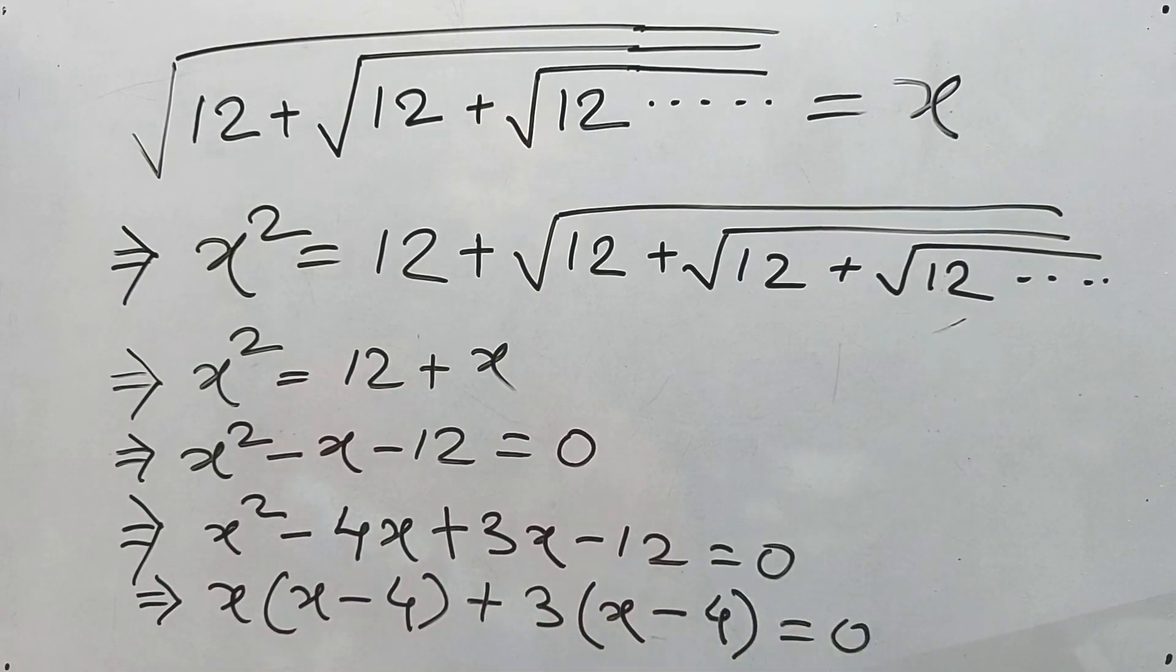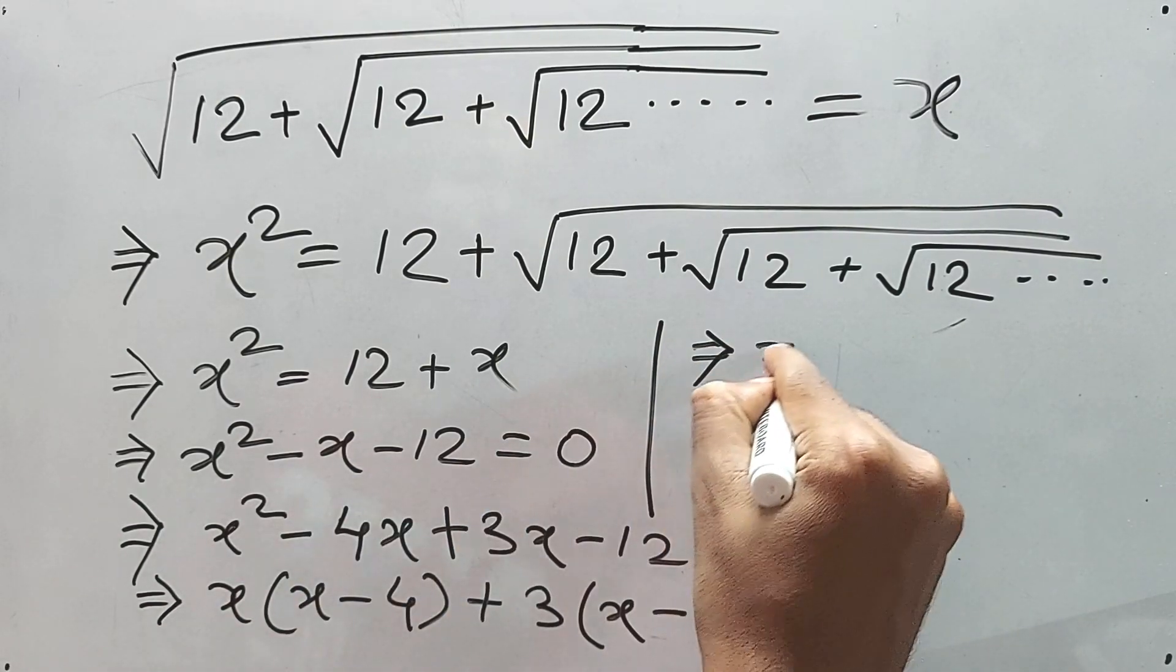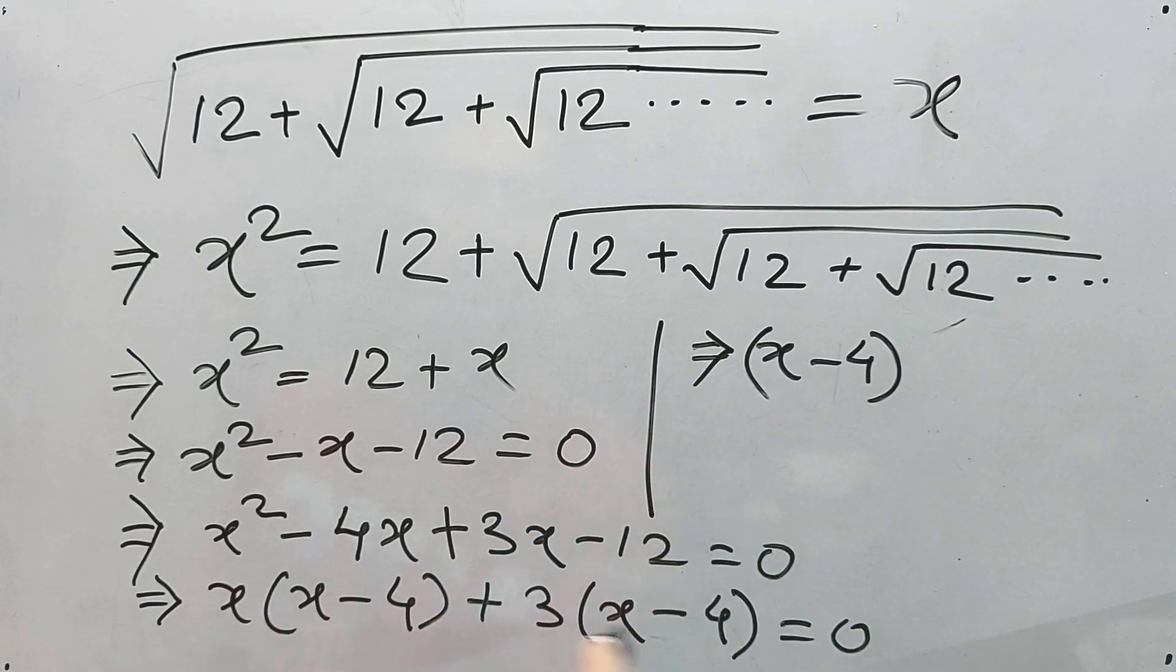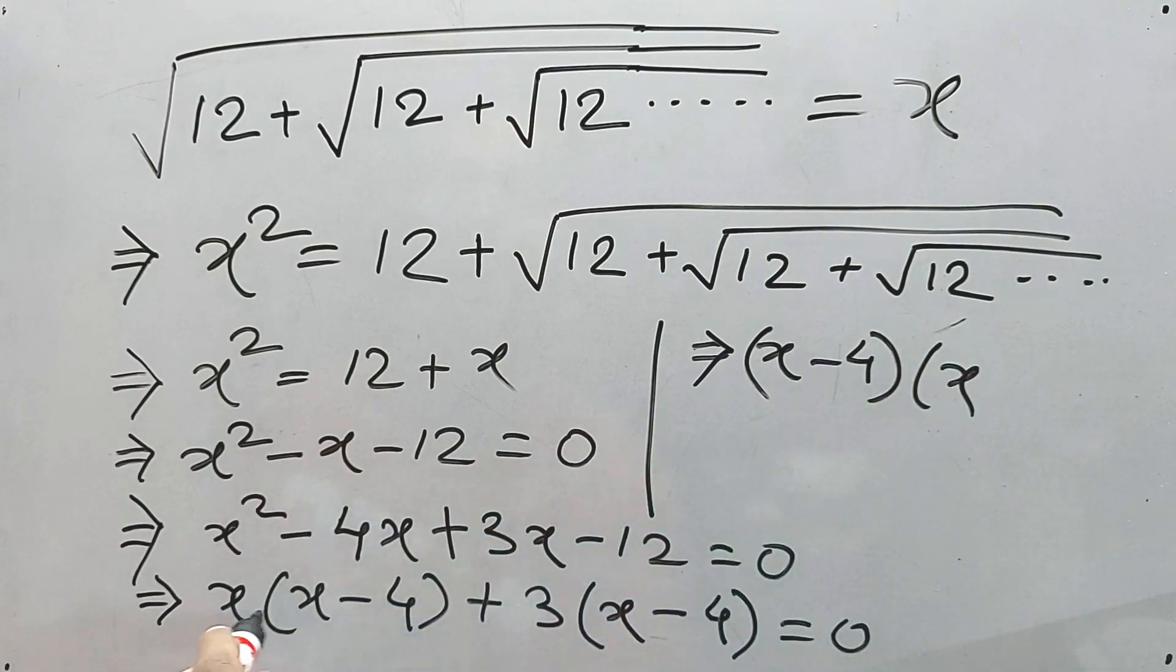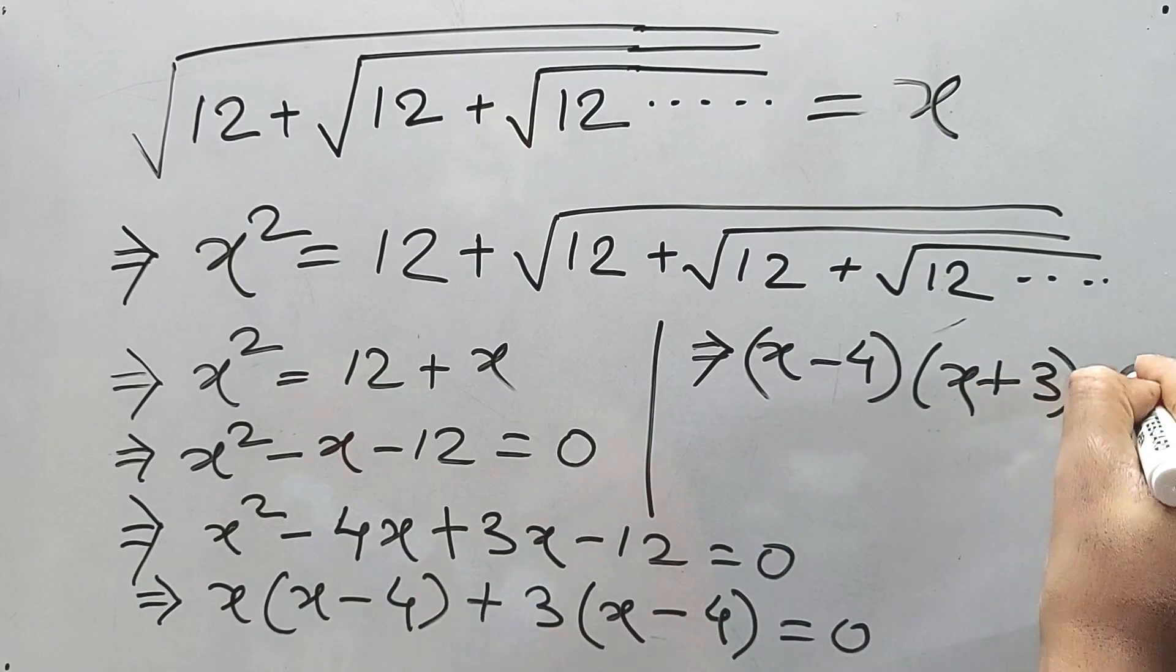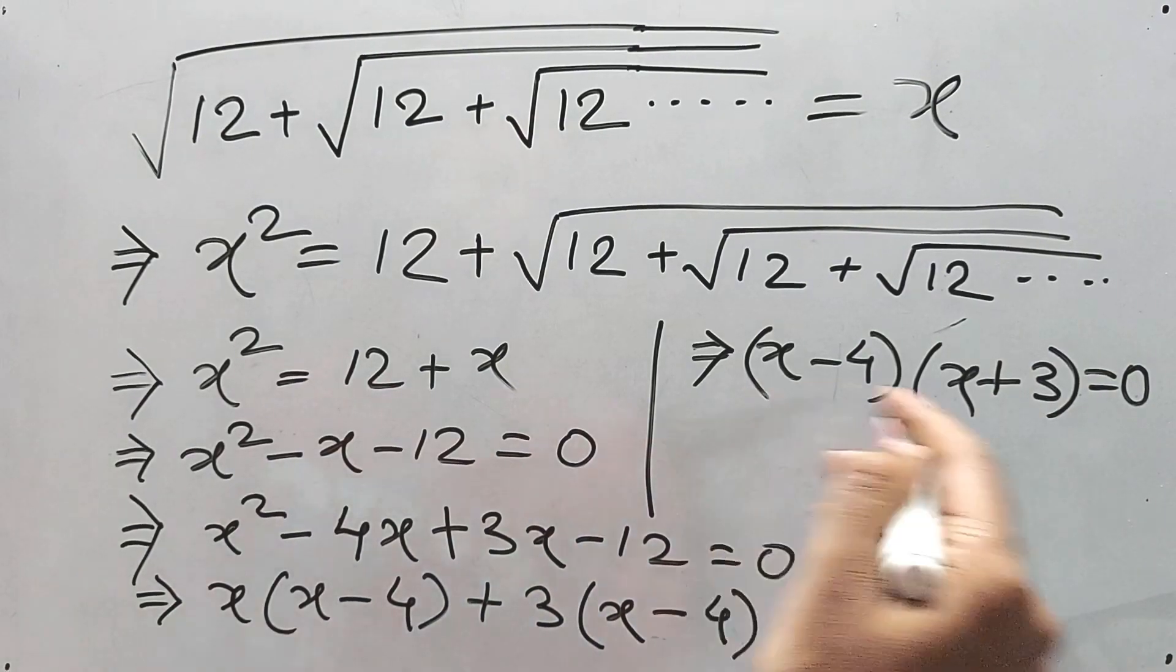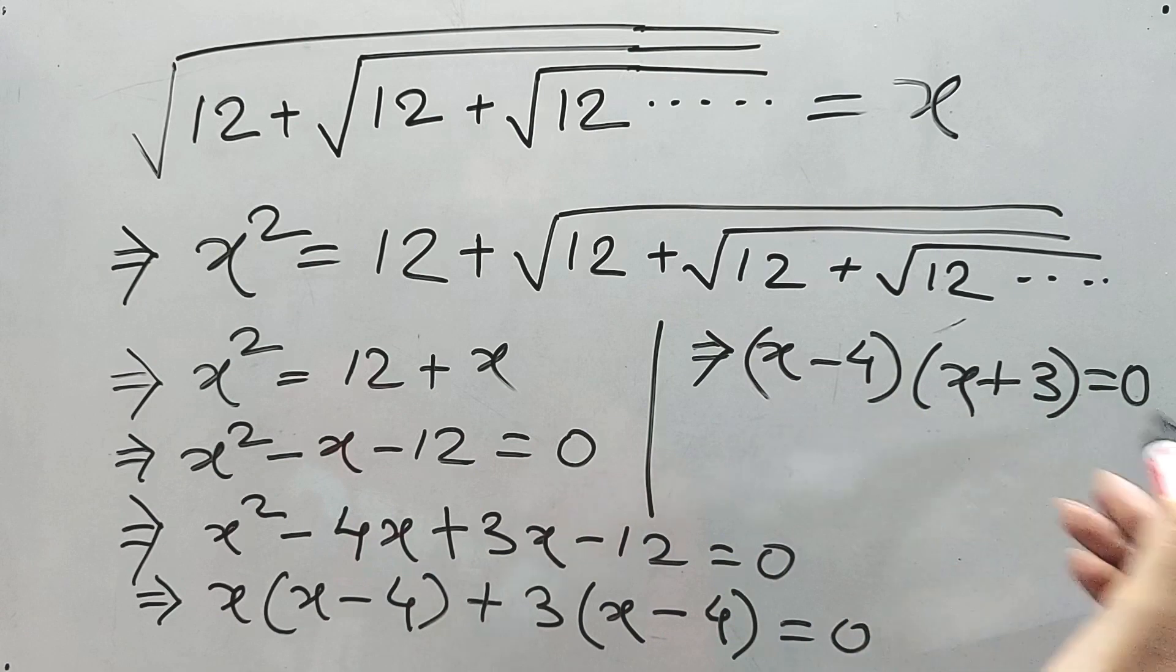Let's do this here. So this implies x minus 4 has been taken as common, and so it will be x plus 3. This implies x minus 4 equals 0 or x plus 3 equals 0, right?